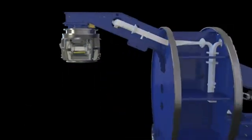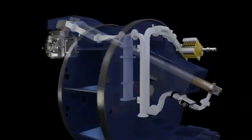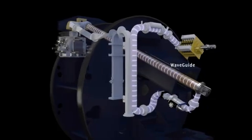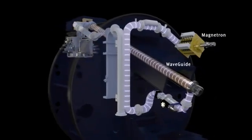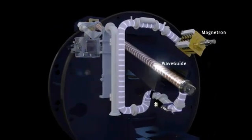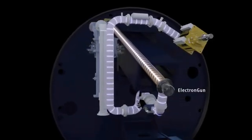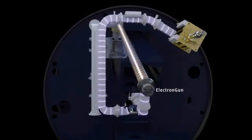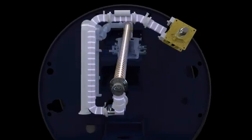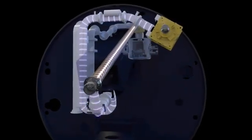Beam Generation. Radio frequency waves are pulsed into the waveguide by the magnetron. This is synchronized with the injection of electrons into the waveguide by the electron gun. The radio frequency waves accelerate the electrons along the waveguide to a speed approaching the speed of light.